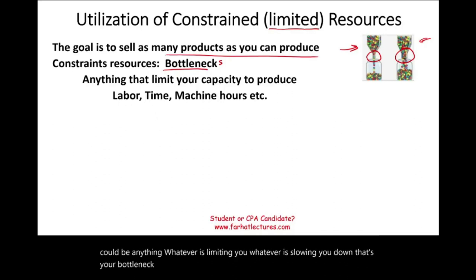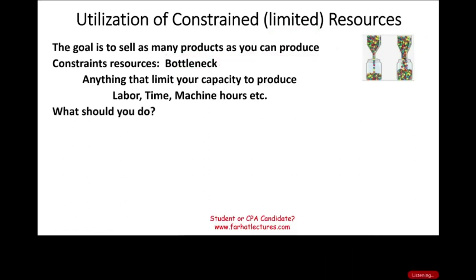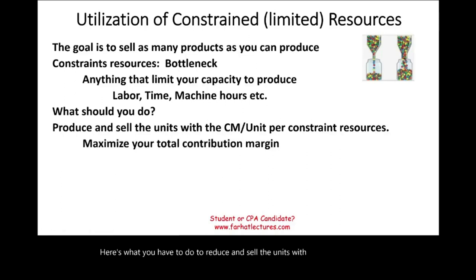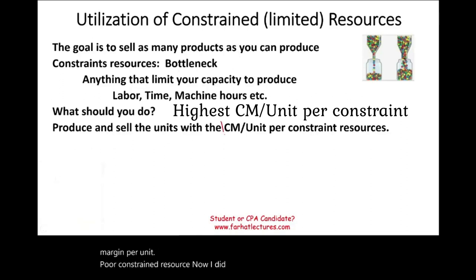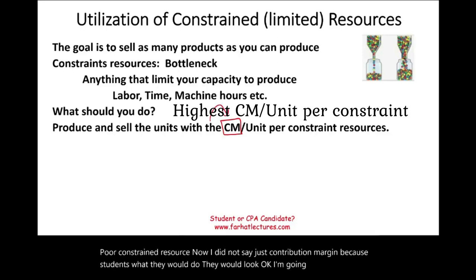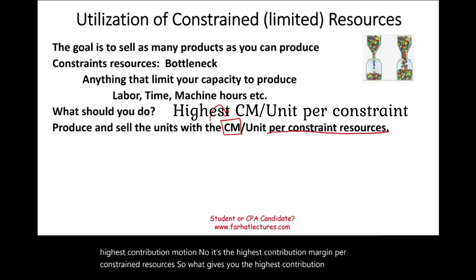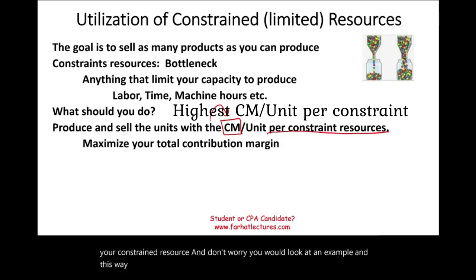We've established that we have a bottleneck. What should you do about it? You need to produce and sell the units with the highest contribution margin per unit per constrained resource — not just the highest contribution margin. The highest contribution margin per constrained resource is what matters, because this is how you maximize your total contribution margin.